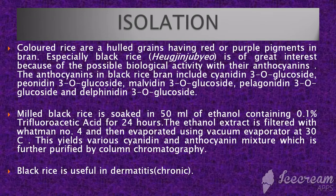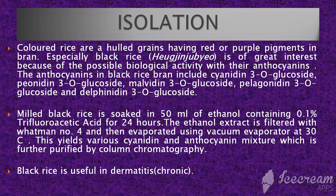Although berries contain the maximum amount of cyanidin, black rice is used for its isolation. Bran is the hard outer layer of cereal grain; it consists of aleurone and pericarp and is an integral part of the whole grain. The soft extract of black rice is filtered, evaporated, and separated by chromatography for the isolation of cyanidin.